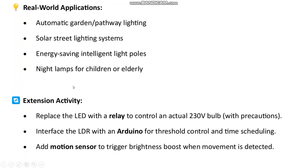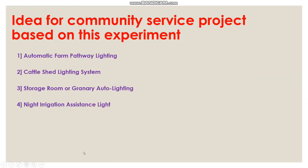Real world applications include automatic garden and pathway lighting, solar street lighting systems, energy-saving intelligent light poles, and night lamps for children or elderly sections. Further activities could include replacing the LED with a relay to control actual 220-volt loads (with precaution), and interfacing the LDR with an Arduino for threshold control and time scheduling. Community service project ideas include automatic farm pathway lighting, cattle shed lighting, storage room or granary lighting, auto lighting, and night irrigation assistant lights.